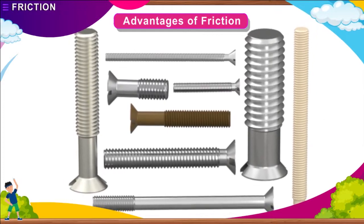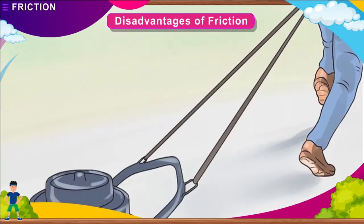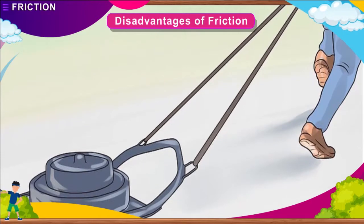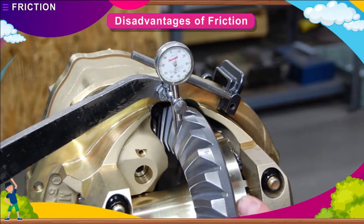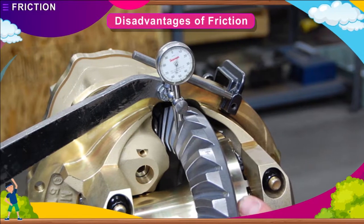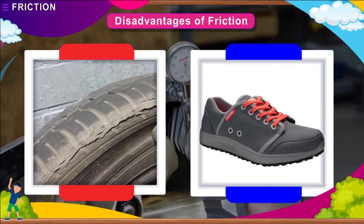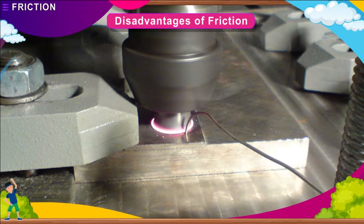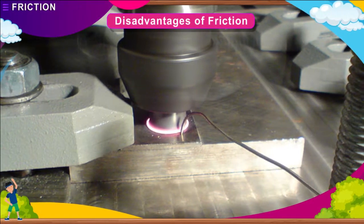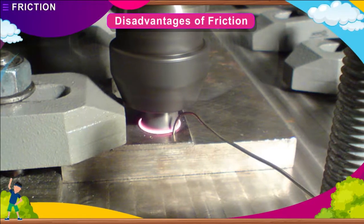Nails and screws are held to objects due to friction. DISADVANTAGES OF FRICTION. Objects in contact require more force to overcome friction between their rubbing surfaces, resulting in wastage of energy. Friction also causes wear and tear on rubbing surfaces — the tyres of vehicles and the soles of our shoes are examples. Friction causes heat, increasing the temperature of many machine parts, which can be harmful. Proper cooling should be done to avoid machine breakdown.